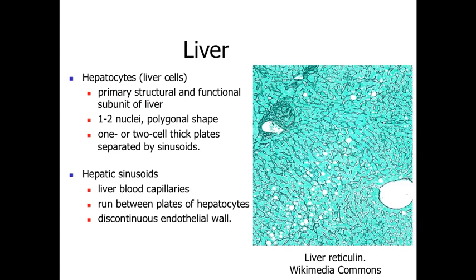In between these portal canals and portal triads, we're going to have the hepatocytes—the primary liver cells and the primary structural and functional unit within the liver. Most of the time, these hepatocytes are going to be in one or two cell-thick plates, separated by blood capillaries referred to as hepatic sinusoids or liver sinusoids. So we have a layer of hepatocytes, then a blood capillary, then another layer of liver cells, and so on—a very rich capillary bed with lots of hepatocytes right up against the capillaries. They're so close that there's a discontinuous endothelial wall, so materials from the bloodstream bathe the hepatocytes very easily.